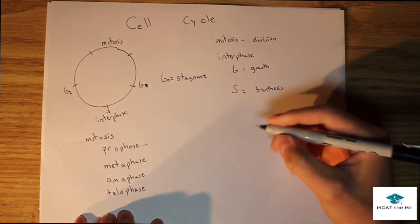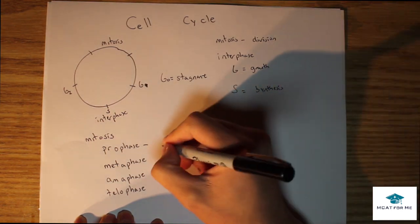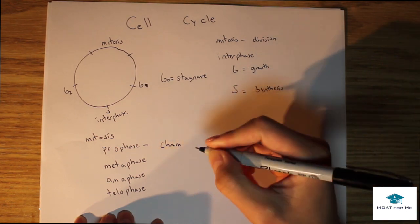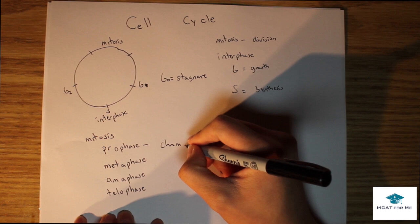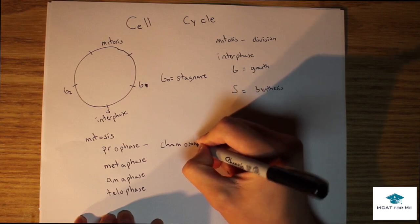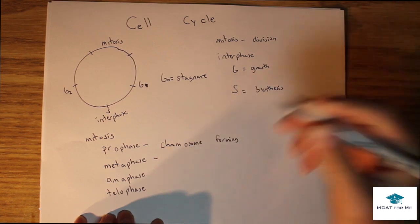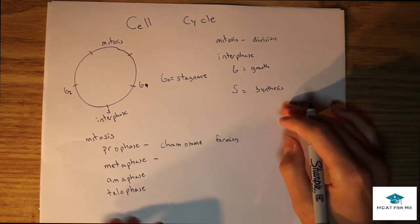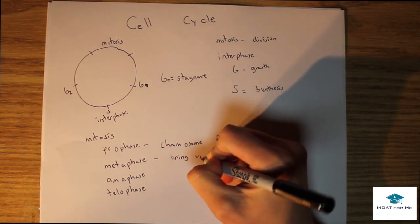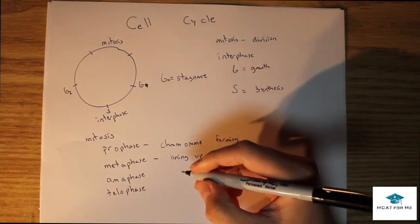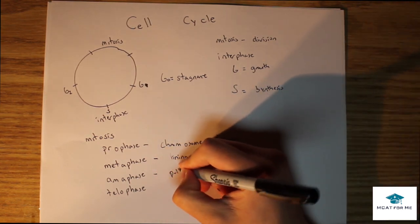Prophase is when we have the chromosome packing. The kinetic core fibers appear, but all the rest is not as important. For the MCAT, we just need to know the bare minimum. Metaphase is the lining up of the chromosomes. Anaphase is when the centromeres are pulling the sister chromatids apart.